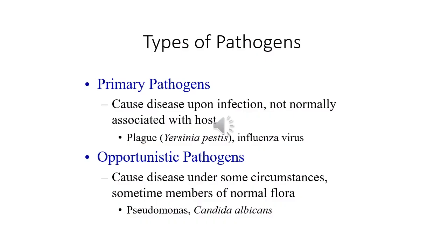Considering pathogens, they can be classified mainly into two types: primary pathogens and opportunistic pathogens. Primary pathogens cause disease upon infection in a normally healthy host — they are not usually associated with the host under normal conditions.